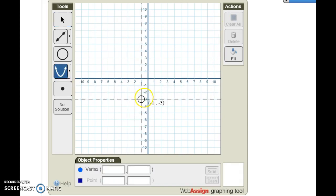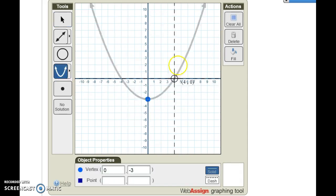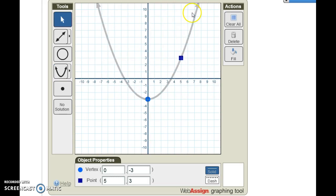For a parabola, you start by selecting the vertex and then one other point that determines the parabola. Again, you can adjust. Now with all these objects, you'll notice that you can choose to make it solid or dashed by selecting the correct option over here.